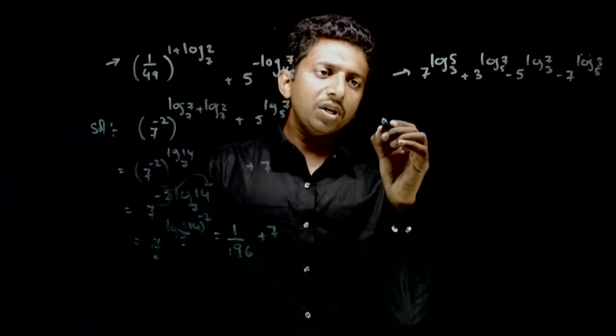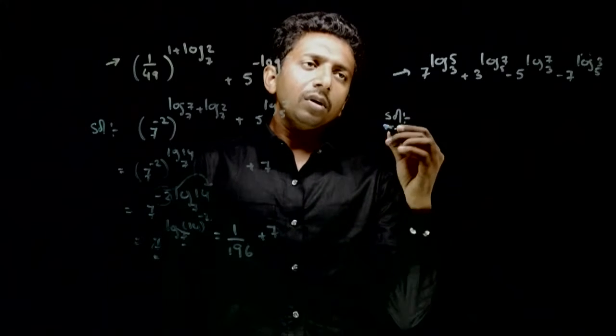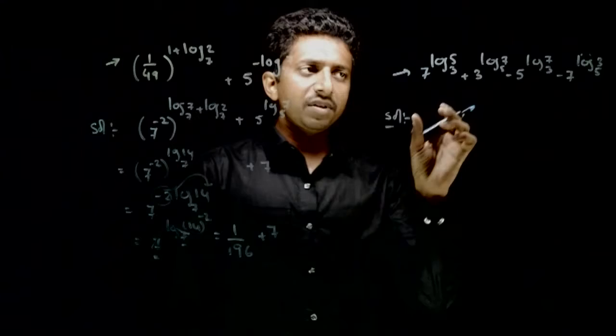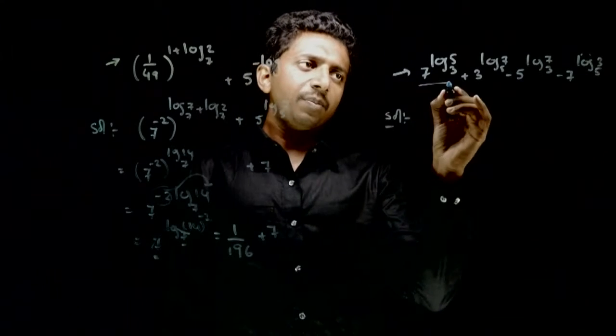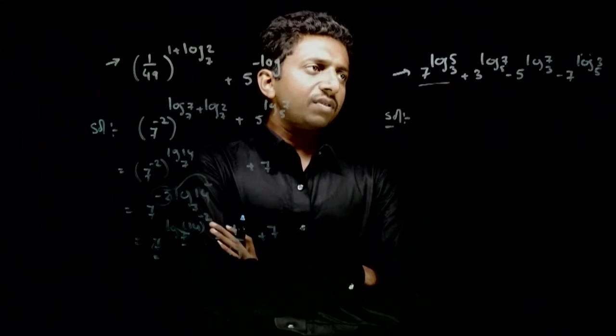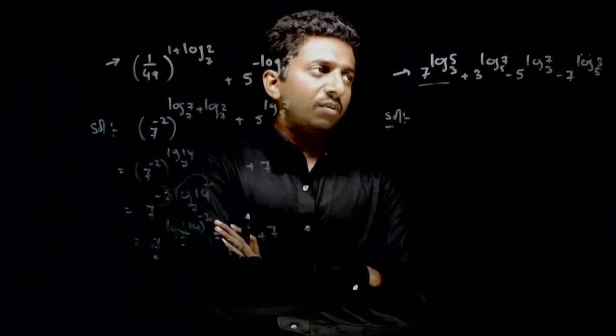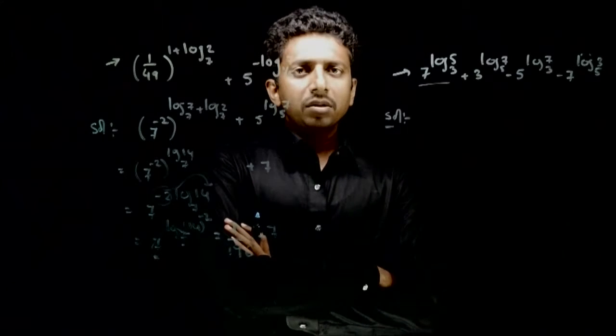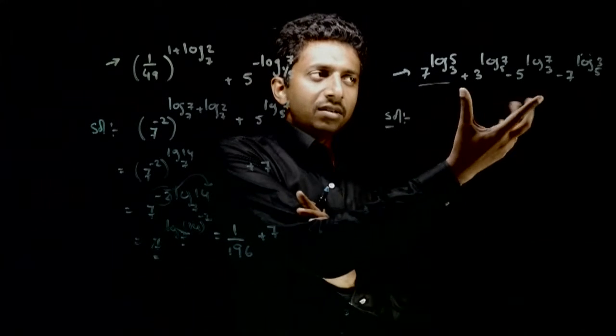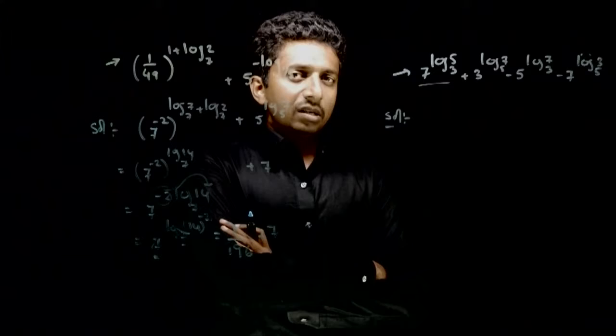And let us go to the next question. Is question me aapko chaar terms diya hai. So you are asked to find the value of the sum of all this. So 7 power log 5 to the base 3, 3 power log 7 to the base 5, 5 power log 7 to the base 3, 7 power log 3 to the base 5. Sabko these two have to be added and these two have to be subtracted. So you have to see.